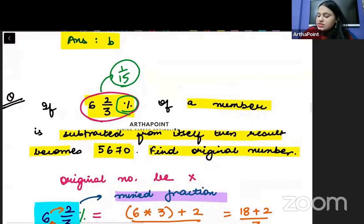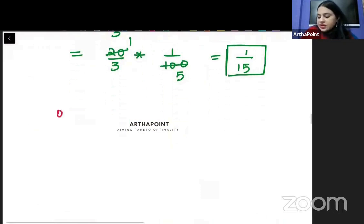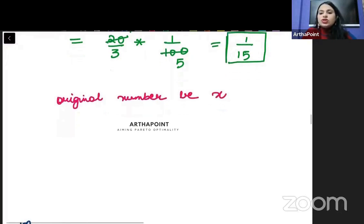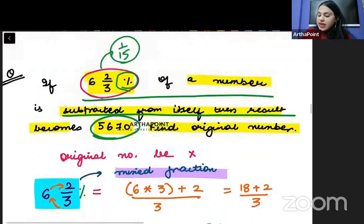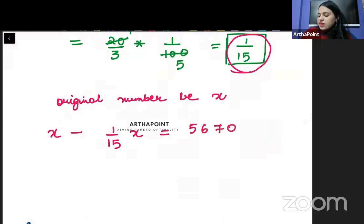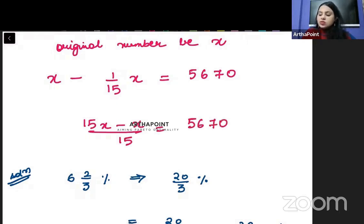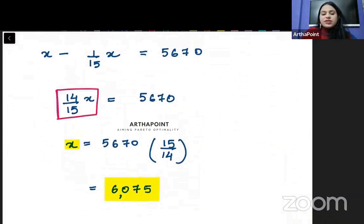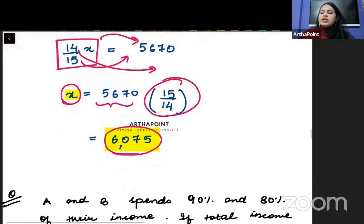It says if 1 by 15 of a number is subtracted from itself, result is 5670. Let the original number be X. X minus 1 by 15 X equals 5670. This gives 15X minus X by 15 equals 5670, so 14X by 15 equals 5670. Therefore X equals 5670 into 15 by 14, which gives the answer 6075.